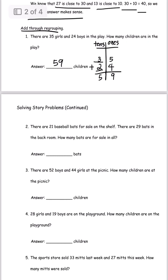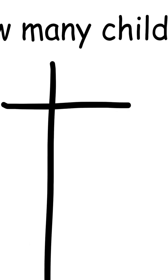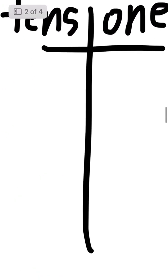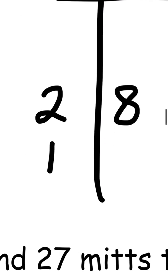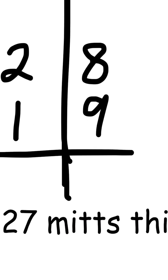Let's move on to the next page and look at number 4. It says: 28 girls and 19 boys are on the playground. How many children are on the playground? This is the ones place and this is the tens place. We have 28 and 19. This is different from our first question because there are more than 10 ones.